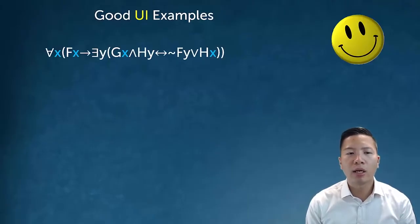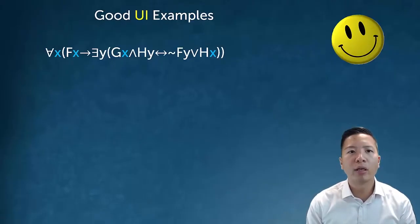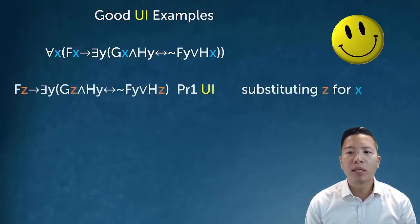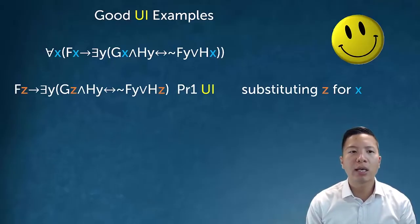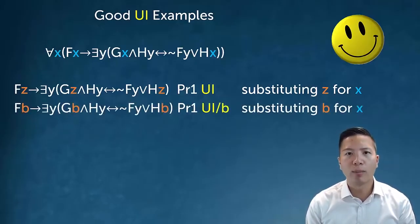Here's another sentence: 'for all x, Fx arrow' followed by a big existential. The x's bound to the main universal quantifier are highlighted in blue. A good UI example substitutes z for x, changing every single instance of x under the scope of the universal to z. You can also use a name letter b — no problem.